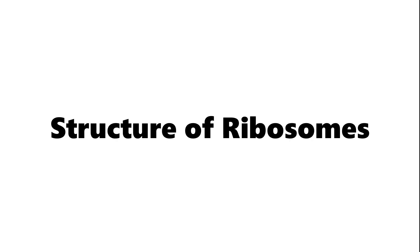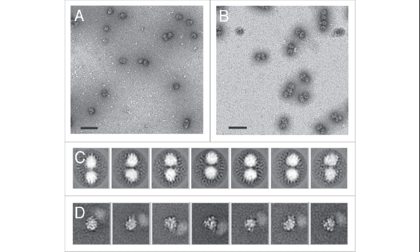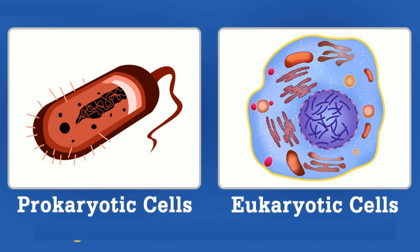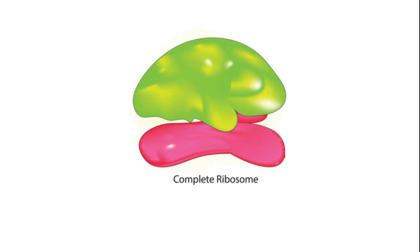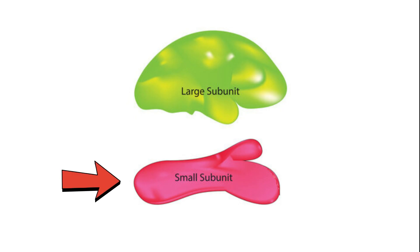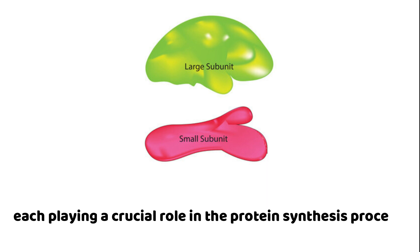Ribosomes are small, intricate structures found in all living cells, from bacteria to humans. They are composed of two main components: the small subunit and the large subunit, each playing a crucial role in the protein synthesis process.